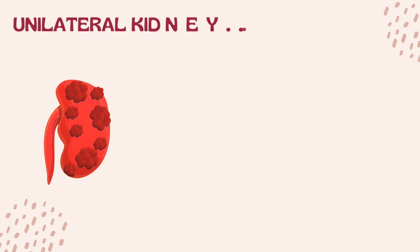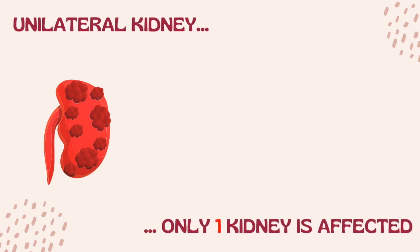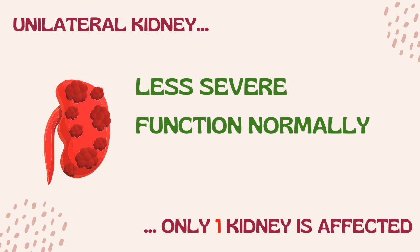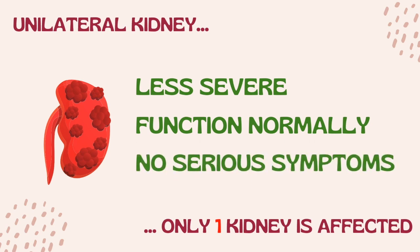Unilateral kidney dysplasia is when only one kidney is affected and will not work properly. This type of dysplasia is usually less severe as you can function normally with just one kidney. As long as one kidney develops normally, most children don't experience any serious symptoms, although close monitoring of the one functioning kidney is warranted. In some cases, the other non-affected kidney grows larger than normal to compensate, and may be at risk for urinary tract infections or high blood pressure later in life.